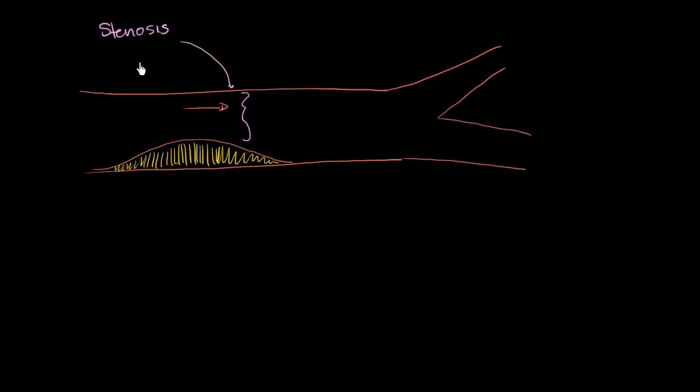It can also refer to the narrowing of any type of tubular structure. So if you have any type of pipe in a biological system and it gets narrowed, they might refer to stenosis there. But usually, they're talking about a blood vessel. In this example that I've drawn here, it's an artery. So the stenosis is just the narrowing.